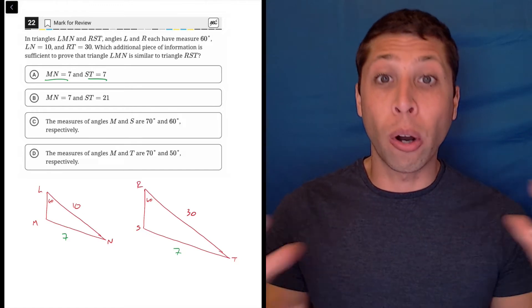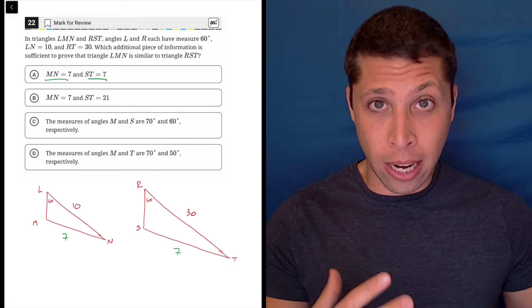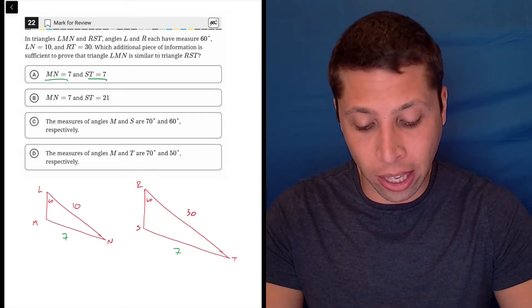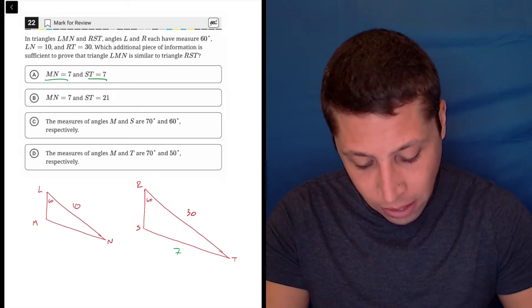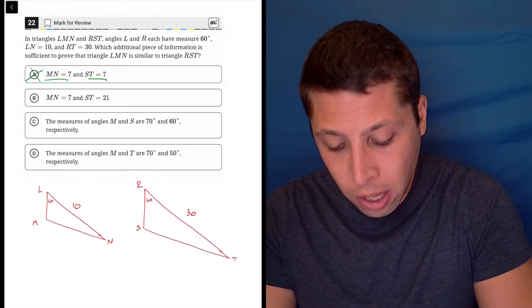And so why would it grow from 10 to 30, but then the 7s are the same? That just doesn't make any sense. It hopefully just kind of strikes you as like, no, that's just defeating the purpose of what a similar triangle is supposed to do. So that gets rid of A.